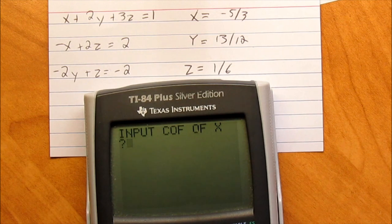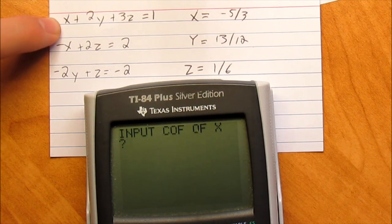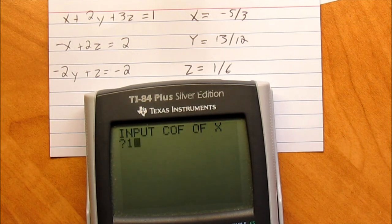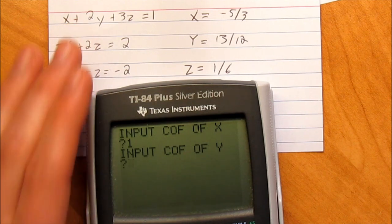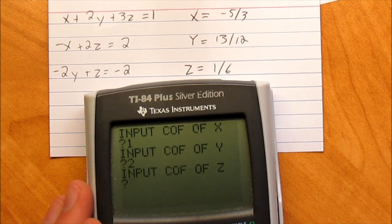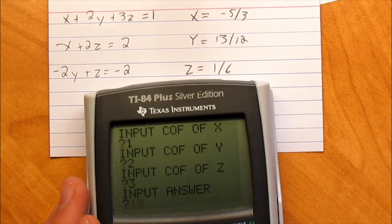Input coefficient of x. So if there's none in front, it's obviously just 1. So then coefficient of y is 2. Coefficient of z is 3. And the answer is 1.